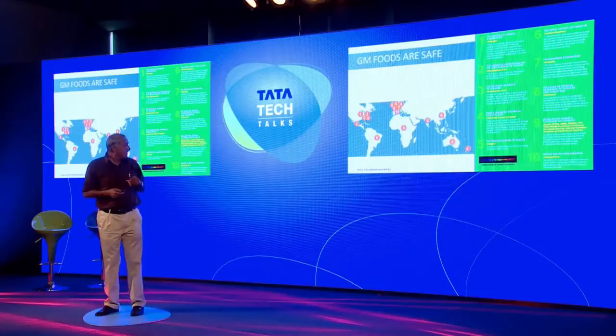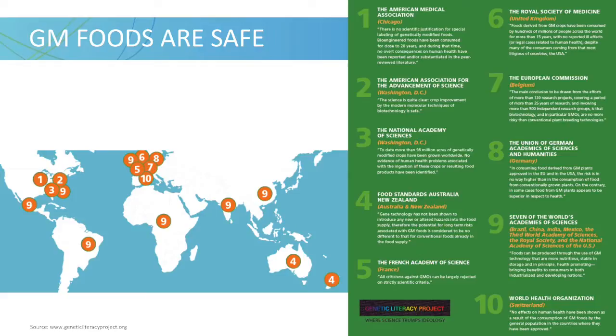The scientific consensus on GM crop safety is probably as solid as the consensus on the theory of gravitation. All major scientific academies have said that GM crops, if not safer, are at least as safe as foods produced through any other means.